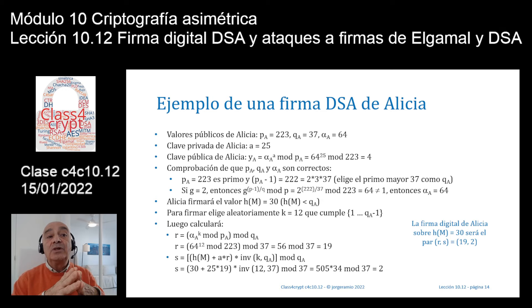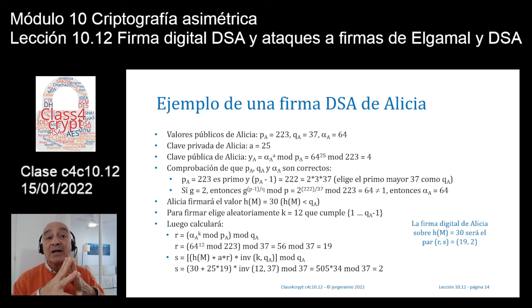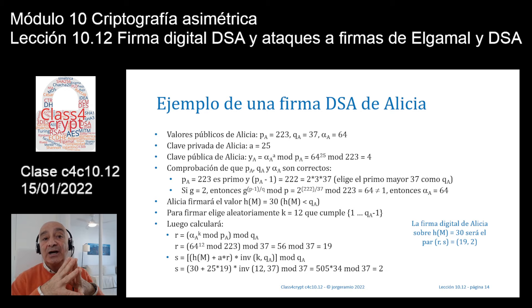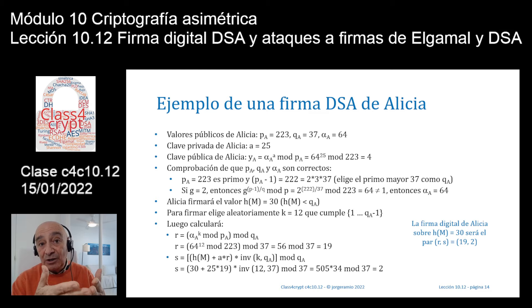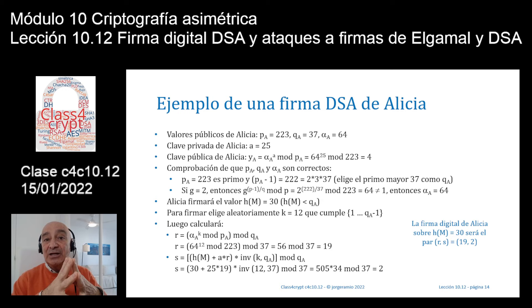Segunda parte de la firma: S = (H(M) + a·R) · K^(-1) mod Q_A = (30 + 25·19) · 12^(-1) mod 37. Eso es igual a 505 · 34 mod 37 (el inverso de 12 en 37 es 34), lo que da S = 2. La firma digital de Alicia sobre H(M) = 30 es el par (R, S) = (19, 2).